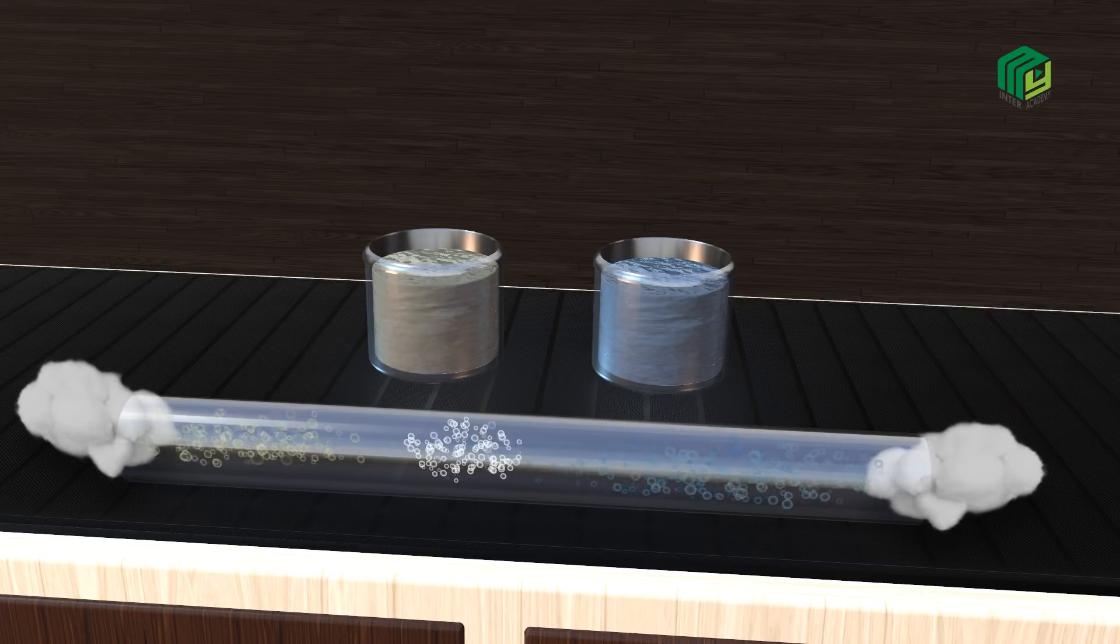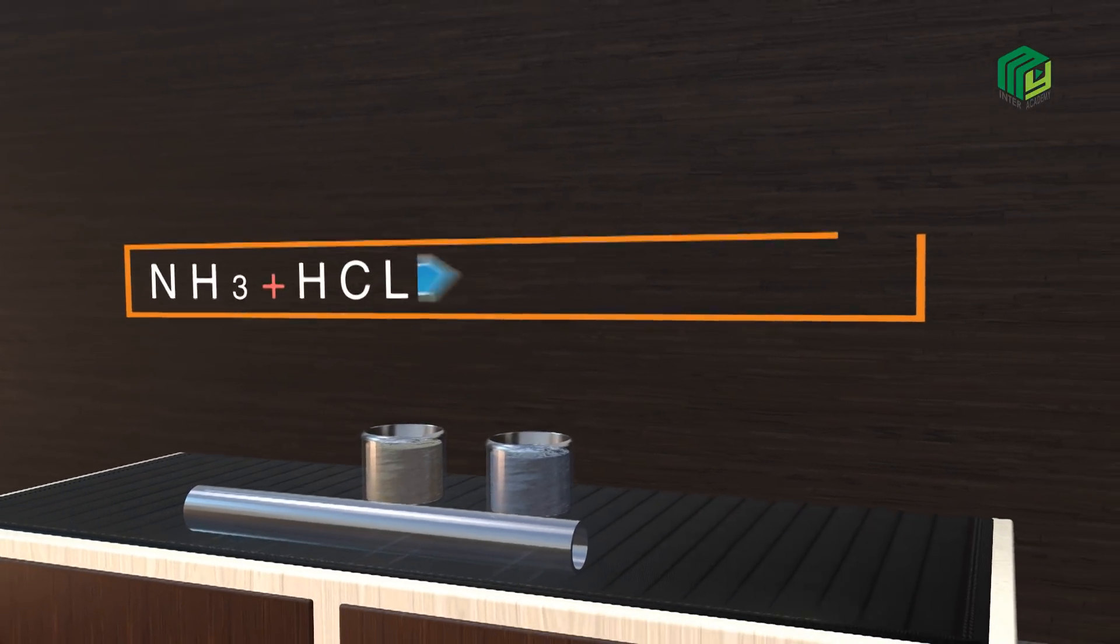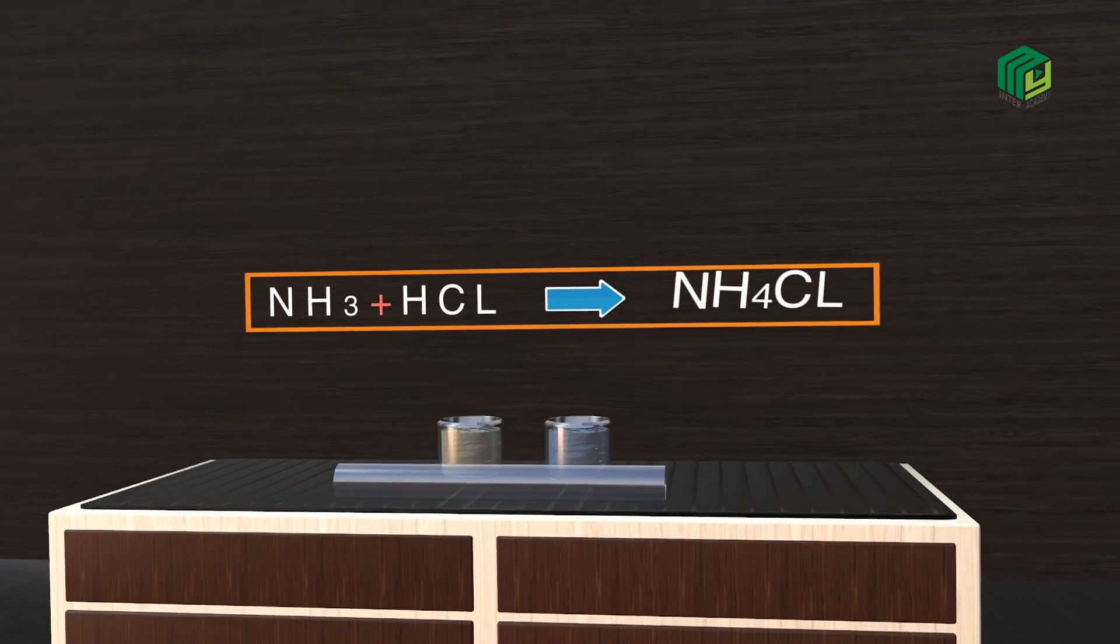...they form ammonium chloride. The equation for the reaction is: ammonia reacts with hydrochloric acid to form ammonium chloride.